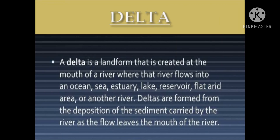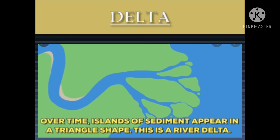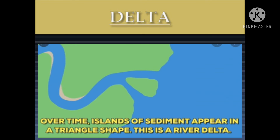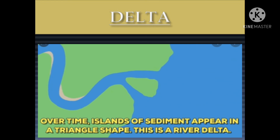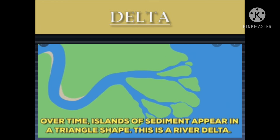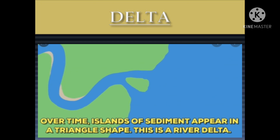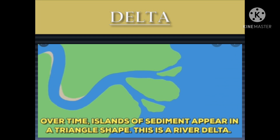Next is delta. A delta is a landform that is created at the mouth of a river, where that river flows into an ocean, sea, estuary, lake, flat arid area, or another river. Deltas are formed from the deposition of the sediment carried by the river as the flow leaves the mouth of the river.